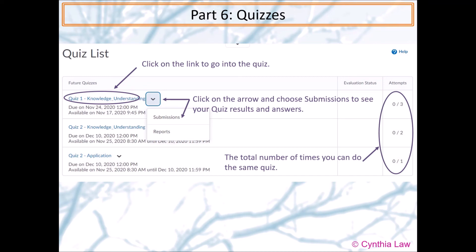Attempts refer to the total number of times you can do the same quiz. So in this example, for the very first item, you can try it three times. The second item, you can try it twice. And the last item, you can only do it once.